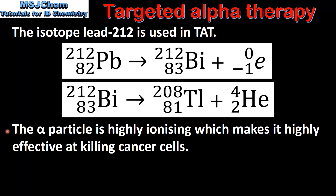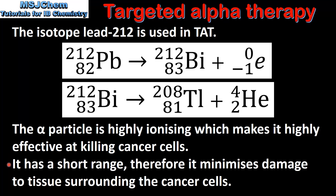The alpha particle is highly ionizing, which makes it highly effective at killing cancer cells. It also has a short range, therefore it minimizes damage to tissue surrounding the cancer cells.